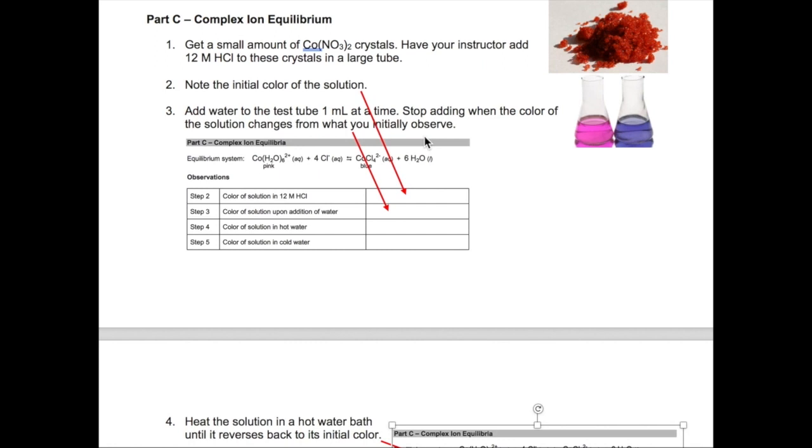Okay, now we get on to Part C. So, in this part, you must generate your complex ion solution first. To do this, use a scoopula to get a very small amount of the cobalt nitrate crystals, which has this reddish color. Then, ask your instructor to add 12 molar HCl to the crystal in a large test tube. Record the color in the first row of Part C of your lab report.